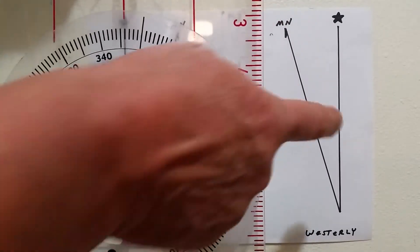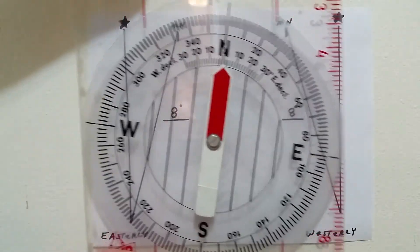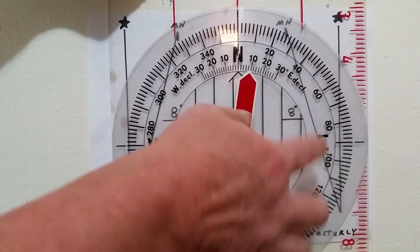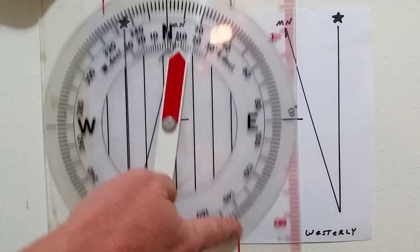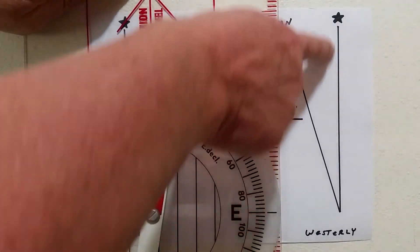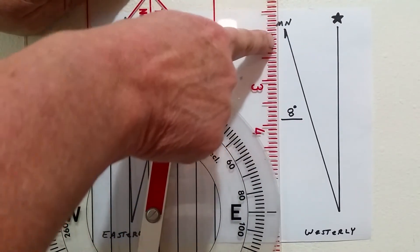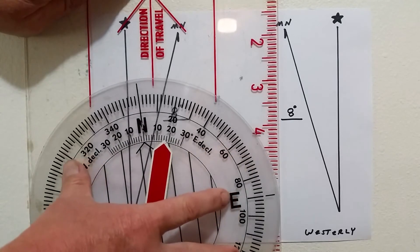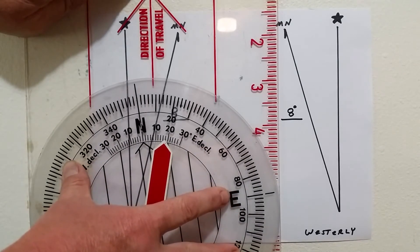And of course, it's the same way for this side, for the westerly. I want to turn it, except I'm going to turn it from north, my star to my harpoon, this direction. If I'm in the westerly, doing a westerly declination, I move it eight degrees.